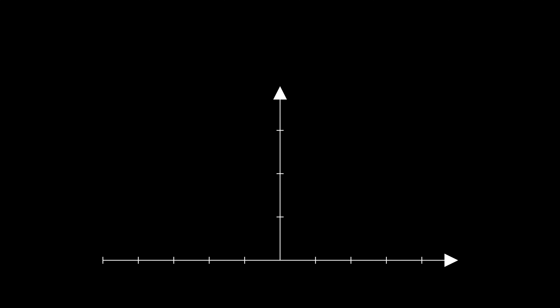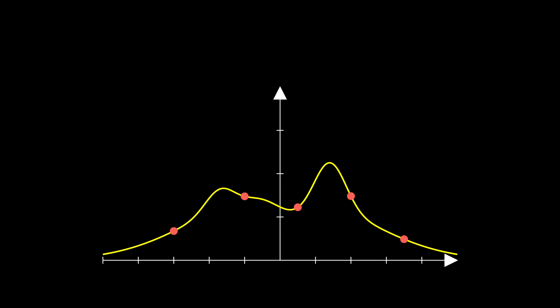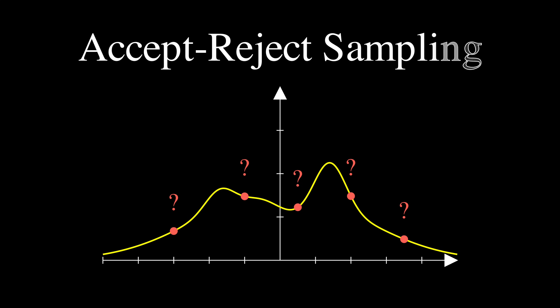Imagine you're trying to generate random samples from a complex probability distribution that has multiple peaks and valleys, but here's the problem: you can't directly sample from it because it's too complicated. And to make matters worse, you don't even know its normalizing constant — that value z that makes all the probabilities properly sum to 1 when you integrate from negative infinity to infinity.